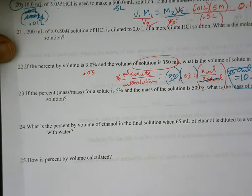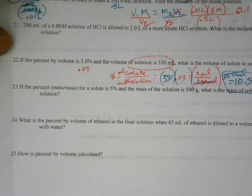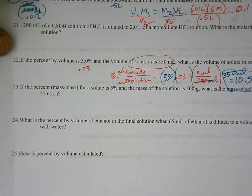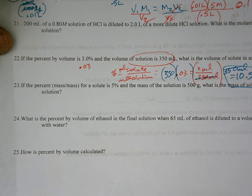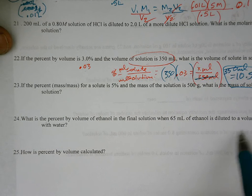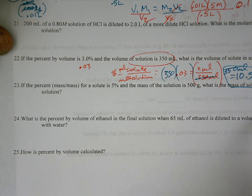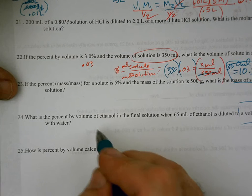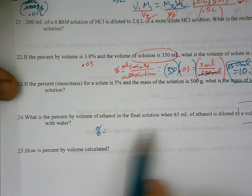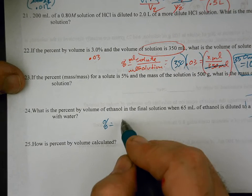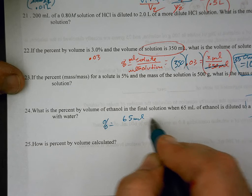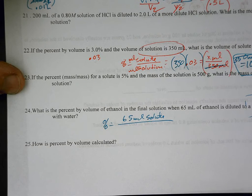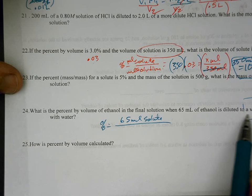Number 24. What is the percent volume of ethanol in the final solution when 65 milliliters of ethanol is diluted to a volume? So we're diluting it to this. This is our total volume, total solution. And we're looking for the percent volume. So percent is going to be equal to our solute solution, 65 milliliters of solute solution, divided by, and it's diluted to a volume.